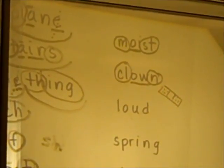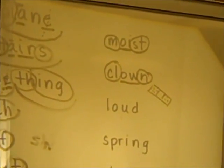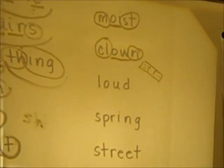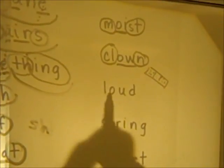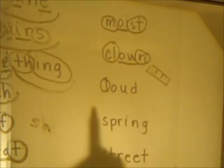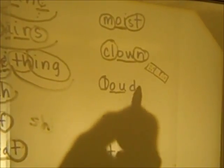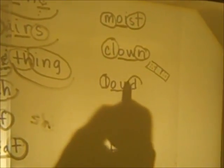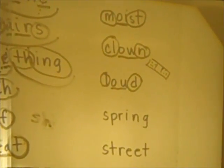Let's do loud. What's the beginning sound, Matthew? L. Okay, circle the L. What do we underline, Nick? O-U. O-U, it says ow, and our ending sound is D. L-OW-D.